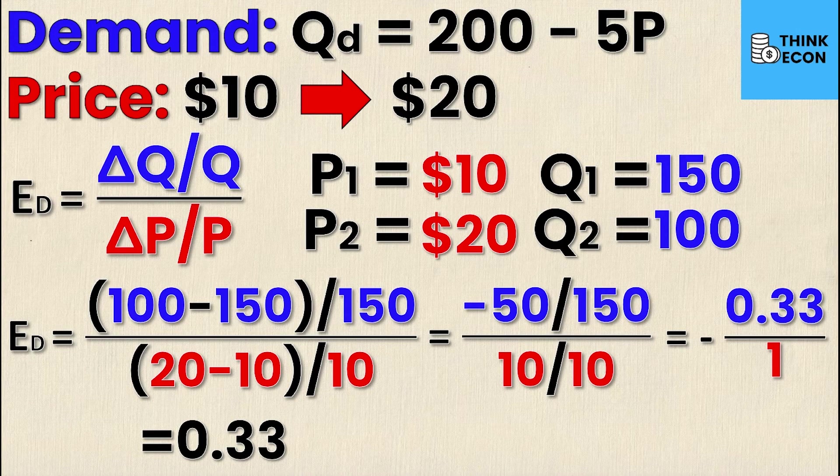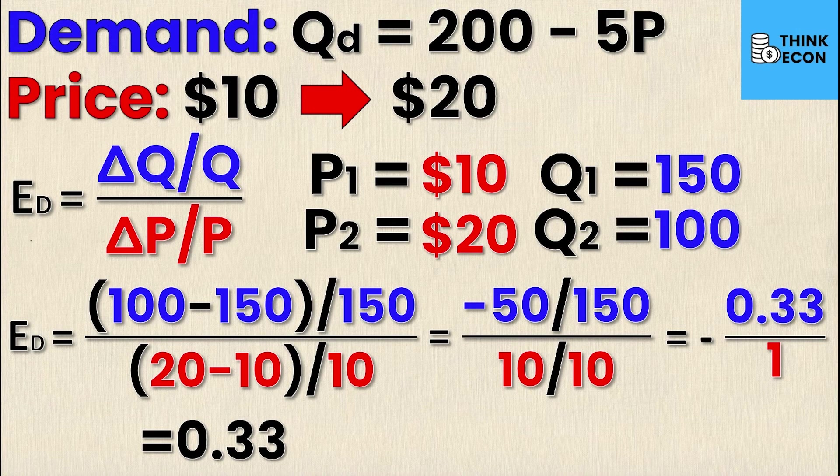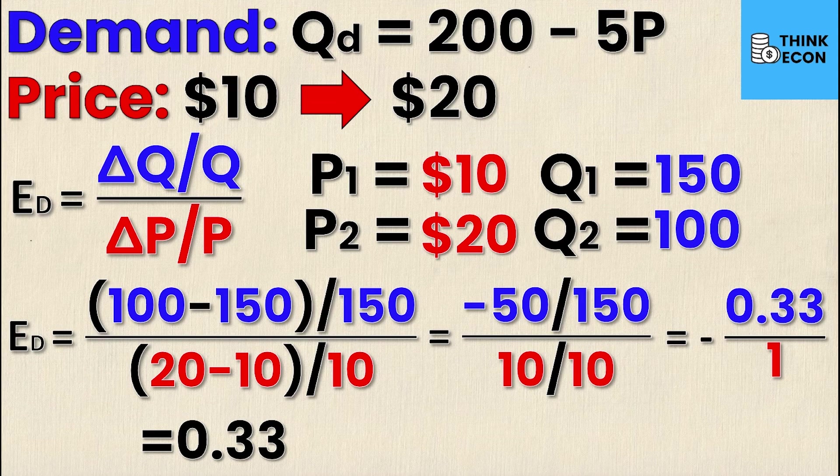It has to be because the relationship between P and QD is always negative. That follows the law of demand where if you increase the price, then quantity demanded will go down, and that's exactly what you see here. Price goes up from $10 to $20 and quantity demanded goes down from 150 to 100.